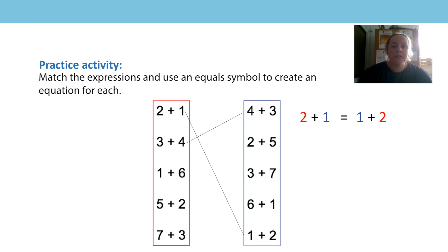Three add four would match to four add three. Both expressions have a three and a four. In the first expression in the red box, the three comes first and the four comes second, whereas in the second expression in the blue box, the four comes first and the three comes second. The sum of both expressions is seven, so we can use an equal sign between both of them.